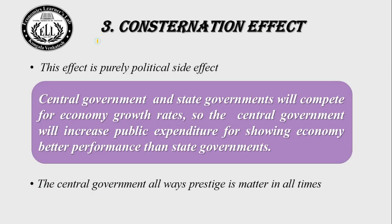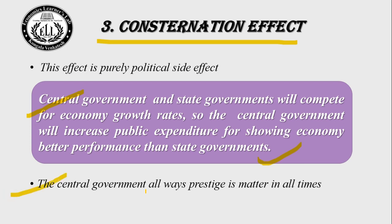The third effect is the Concentration Effect. This is a purely political side effect. The central government and state governments compete for higher economic growth rates. The central government increases public expenditure to show better economic performance than the state governments. The central government always spends at a higher level of public expenditure because it is a matter of prestige — the central government always wants to perform better compared to state governments. Based on the displacement, inspection, and concentration effects, the government keeps increasing public expenditure.